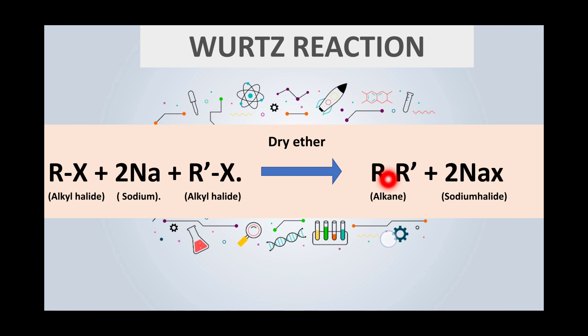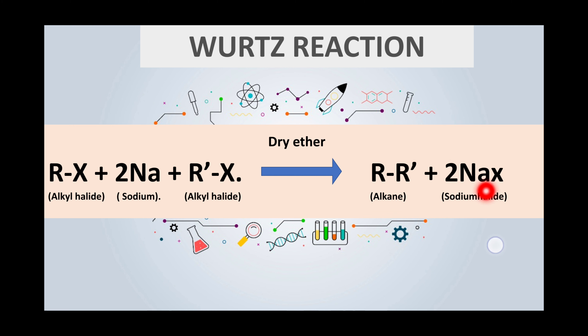So when the two alkyl groups bind with each other, we are getting alkane. And the last keyword is nags. Nags means sodium halide. That means we are getting two sodium halide here.